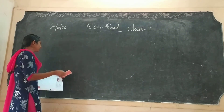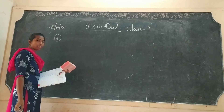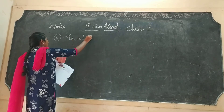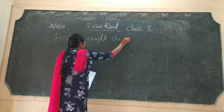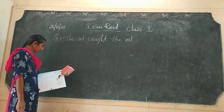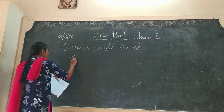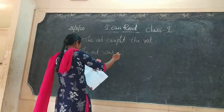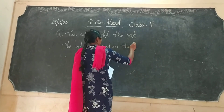Fourth question: What was the cat ready for? The cat caught the rat. The cat was ready for the rat. Where was the rat? The rat sat on the bed.